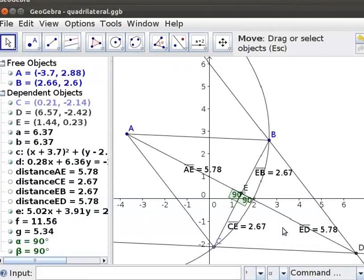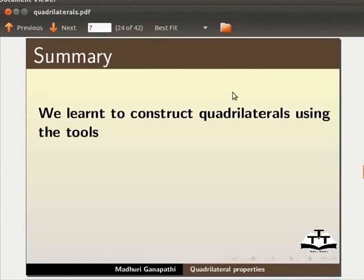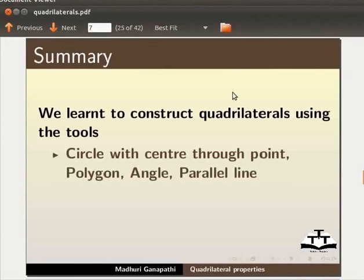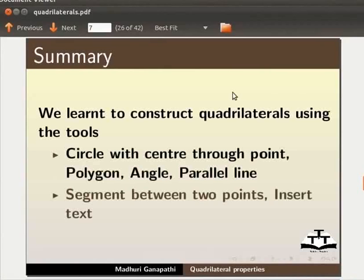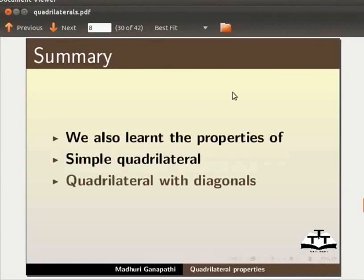With this, we come to the end of this tutorial. Let us summarize. In this tutorial, we have learnt to construct Quadrilaterals using the tools Circle with Center through Point, Polygon, Angle, Parallel Line, Segment between two points and Insert Text. We also learnt the properties of Simple Quadrilateral and Quadrilateral with Diagonals.